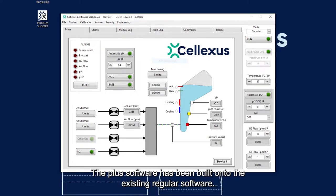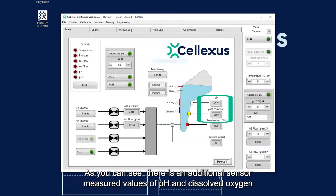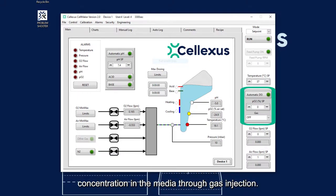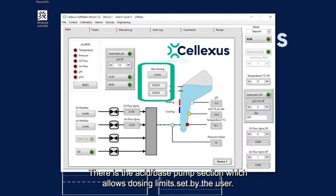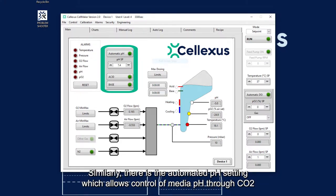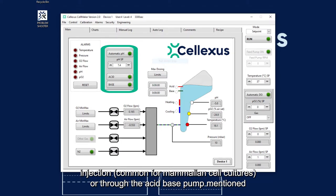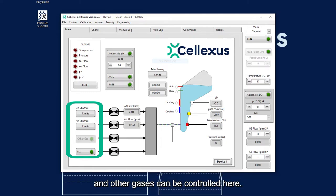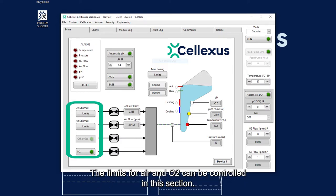The plus software is being built onto the existing regular software. And as you can see, there is an additional sensor measured values of pH and dissolved oxygen, PO2. There is the automatic DO setting, which allows you to automate the optimal dissolved oxygen concentration in the media through gas injection. There is the acid-base pump section, which allows dosing limits set by the user. Similarly, there is the automated pH setting, which allows control of the media pH through CO2 injection, common for mammalian cell cultures, or through the acid-base pump mentioned, which is common for microbial fermentation. The injection of the nitrogen gas, which can flush the system for anaerobic processes, and other gases can be controlled here. The limits for air and O2 can be controlled in this section.